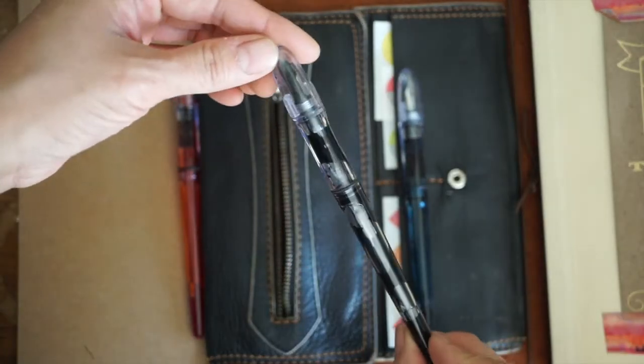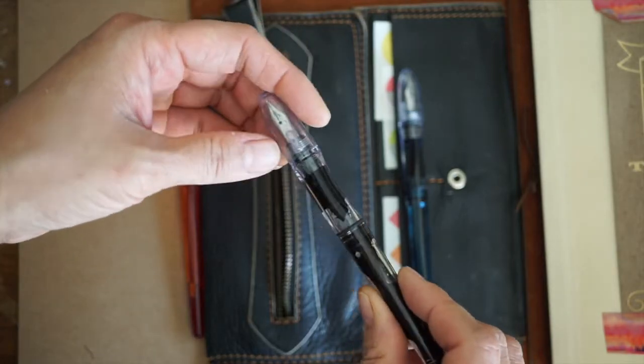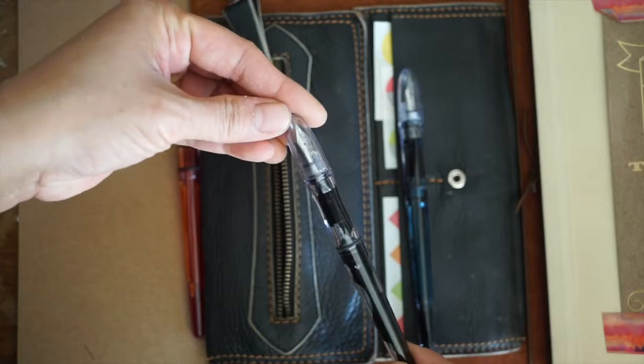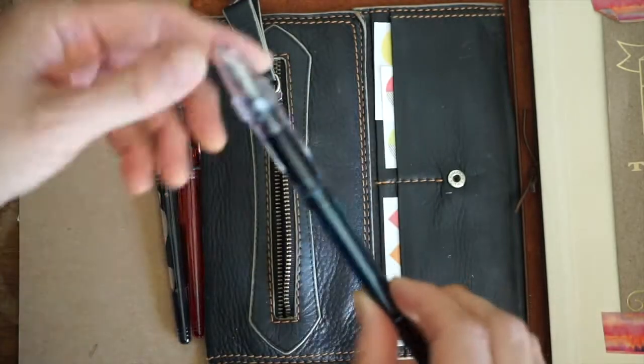And then I've got a Noodler's black ink because I realized that most of the fountain pen inks are water soluble, so if you try to do watercolor on top of it it's not going to work very well.